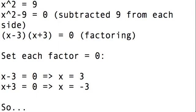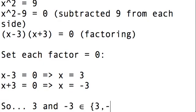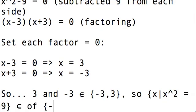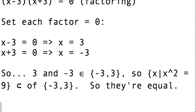So 3 and negative 3 are in {-3, 3}, so {X | X² = 9} is a subset of {-3, 3}. So they're equal. Fantastic.